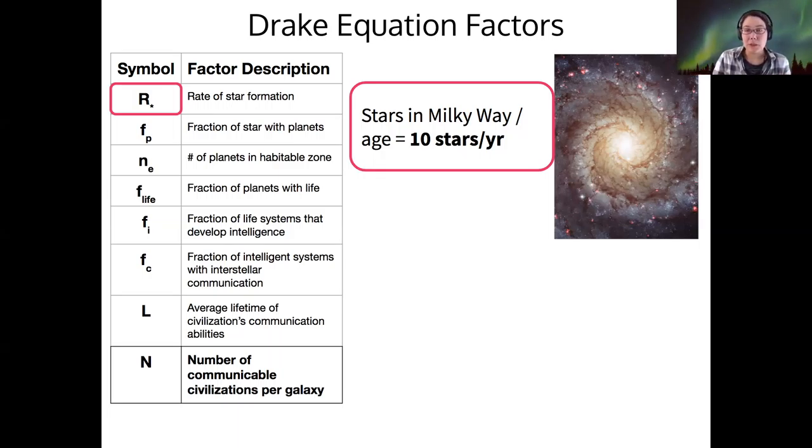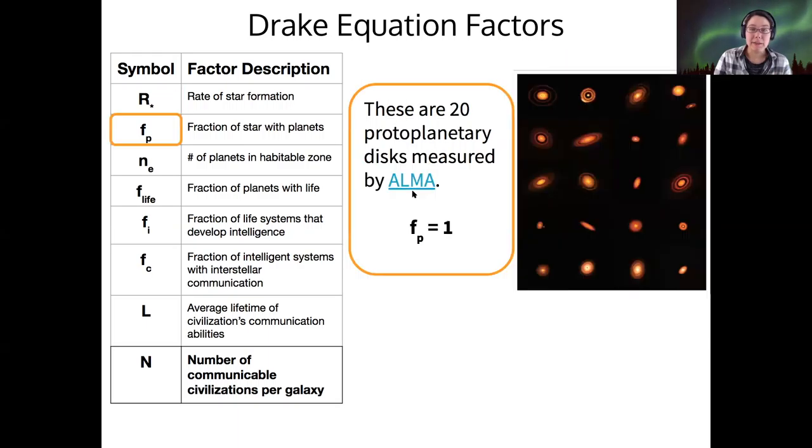The fraction of stars that have planets is the next factor, and we optimistically set this to one because we have found protoplanetary disks around essentially every star-forming region that we've inspected. So it seems like planet formation is very common and a natural process of star formation.